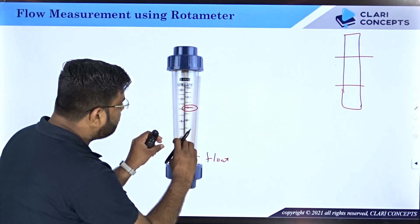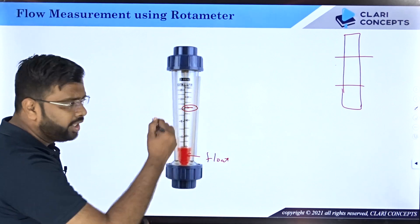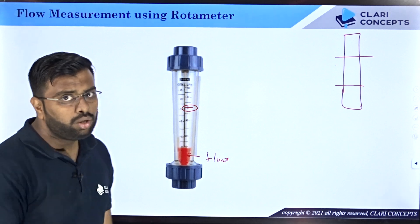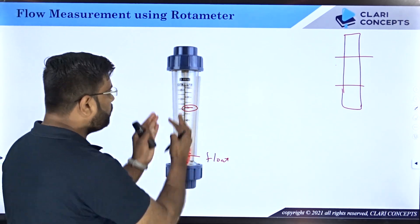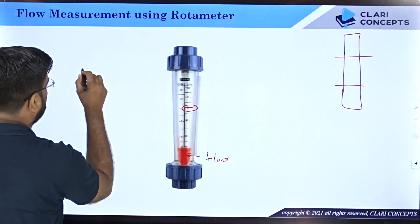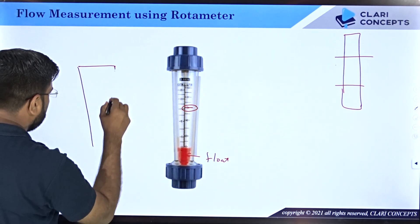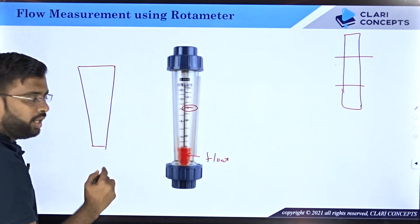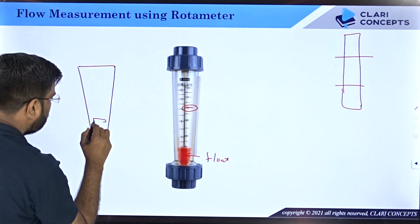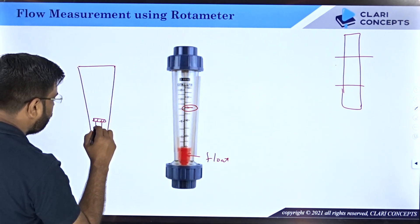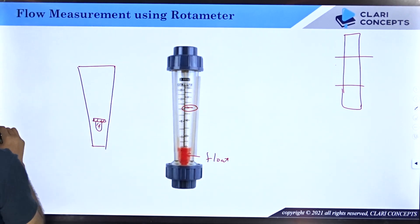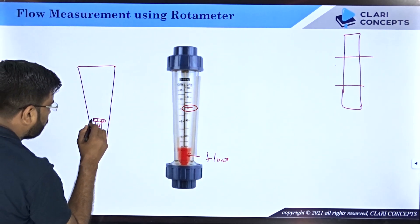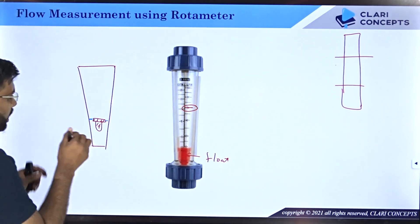Now the question is: how does the float adjust itself depending on the flow rate? The physics behind this is that the pipe in the rotameter is not of constant cross-sectional area — it has a varying, gradually increasing cross-sectional area. As the float moves upward, the area around it increases. The float has a specific diameter, and the area available for water to pass is only the annular ring between the float and the tube wall — all the water passes through this annular region.